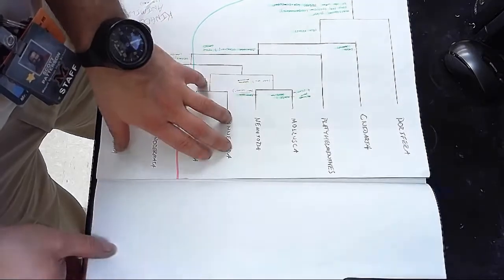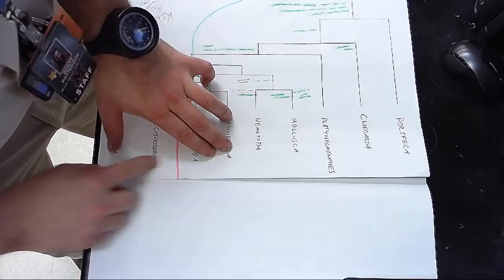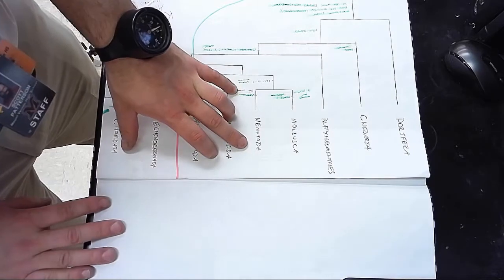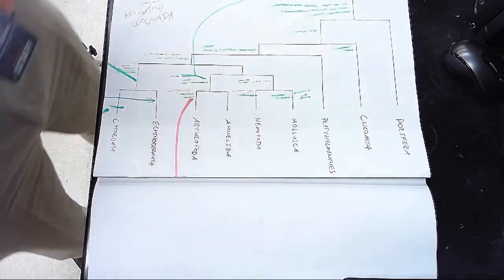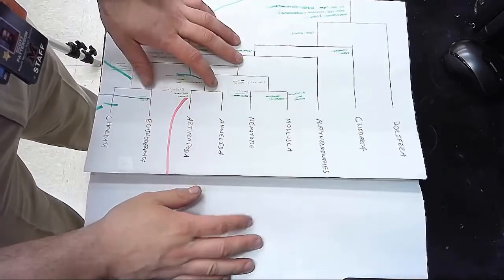So we can flip up this tab, we can still see our cladogram, we can take notes while we do our lab looking at the diversity of animal life. But oh no you say, this is not enough room. Well watch this.